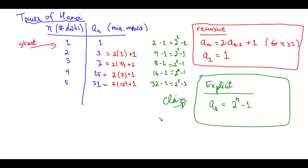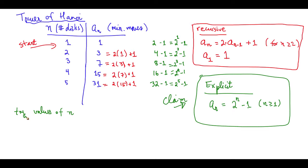The claim is that the minimum number of moves to solve the Tower of Hanoi with n disks satisfies the equation 2 to the n minus 1. How do we go about proving this sort of claim? One thing we could do is try different values of n. We are talking about n greater than or equal to 1. So let n equal 1. Then 2 to the 1 minus 1 equals 1, which matches our result. Check — that works.